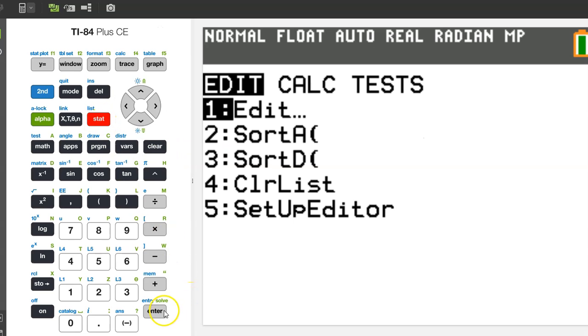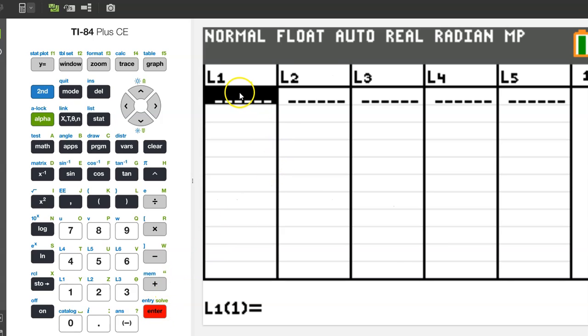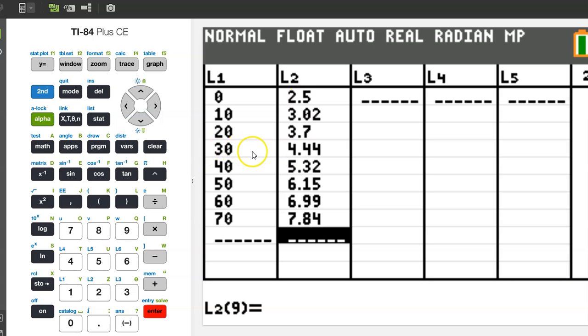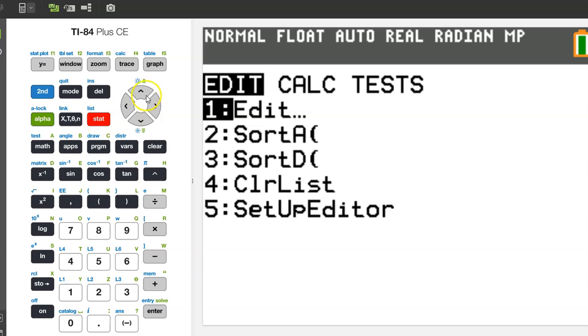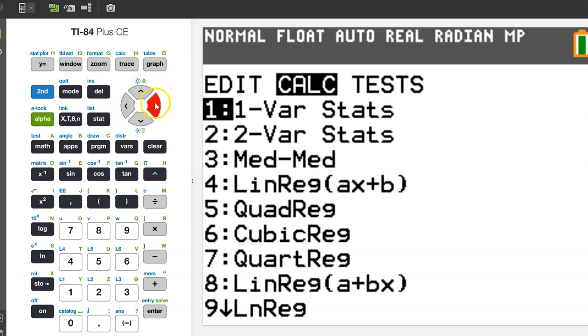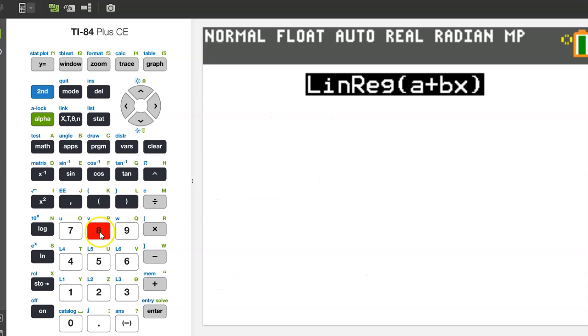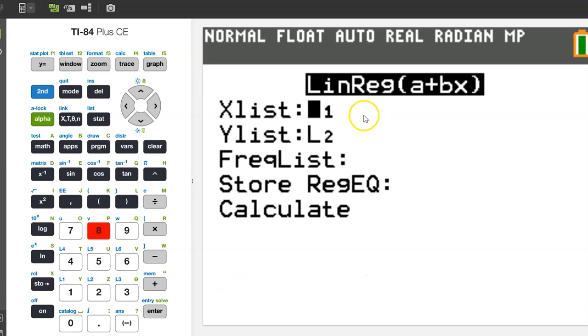Hit the STAT button and hit enter. Let's enter the input values in L1 and the output values in L2. Once the data is all typed in, hit STAT, switch over to the CALC menu, and scroll down to the linear regression model. There are two of them, but we were told to use the one that's in the form a plus bx. So you can either scroll down to item 8, or you can just hit the number 8.